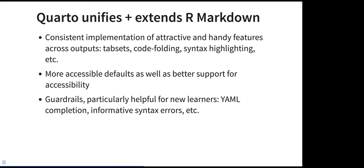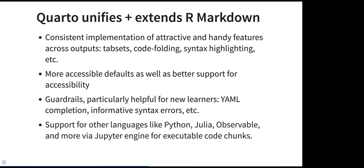Those guardrails include things like YAML completion and informative syntax errors, both of which I'll demo shortly. Finally, Quarto has native support for Python, Julia, Observable, and more via the Jupyter engine. Instead of going through a package like reticulate and relying on the knitr engine, Quarto lets you leverage the Jupyter engine directly, which allows you to write code in Python or any other language the Jupyter engine can handle.